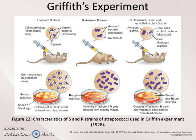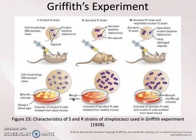And in studying this bacterial infection, he noticed that there were two different types of strains that were visibly distinguishable on a petri plate. One, called S for smooth, had a glossy cover to it, while the other, R for rough, did not.